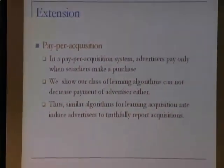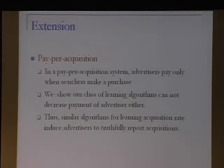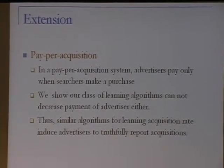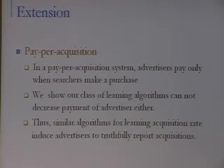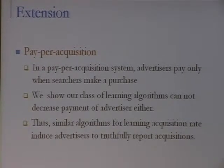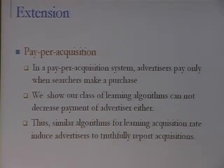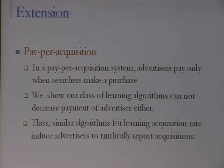We can use these techniques to develop a pay-per-acquisition system where advertisers have an acquisition rate. We rank advertisers in order of their acquisition rate times their bid per acquisition, and learn the acquisition rate using an acquisition-based learning algorithm — essentially an ATR learning algorithm. Everything I just said about clicks applies equally to acquisitions.